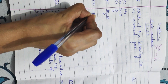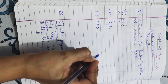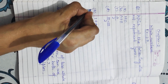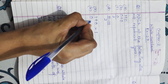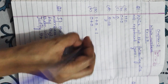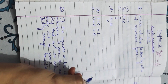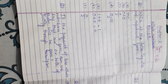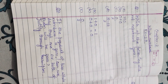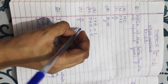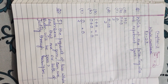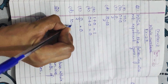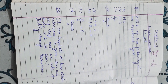Let us start with part A. In part A they have given 1 plus 0. When we add 1 and 0 we get 1. Similarly in part B they have given 0 plus 0. When we add 0 with 0 the answer is always 0. Part C is 0 divided by 2. Whenever we are dividing 0 by any number the answer is always 0.